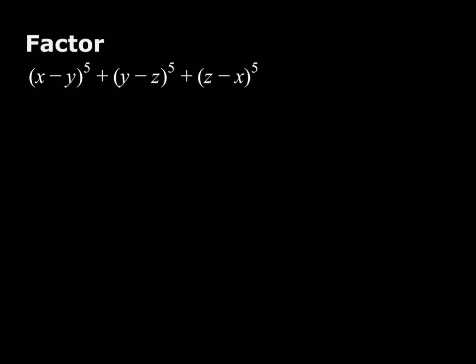We have x minus y to the fifth power plus y minus z to the fifth power plus z minus x to the fifth power, and we're supposed to factor this. This is a sum, so it's not factored, and we need to factor it.